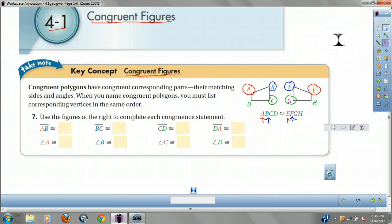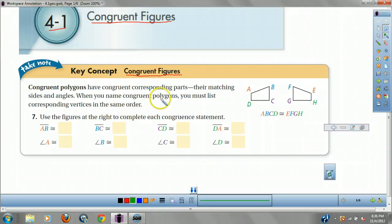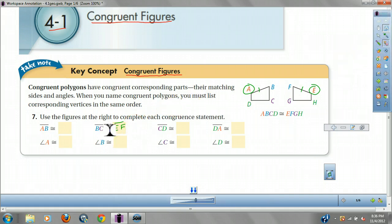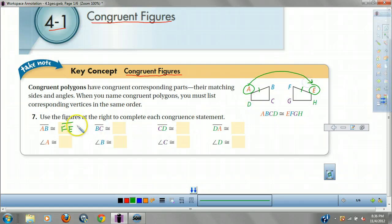So let's try this out. Using the figure at the right, AB would be congruent to which ones? Now you might say FE, but they have to be in the same order. And like we said, A matches up with E. So we go EF. Not FE. That's because angle A matches up with E.